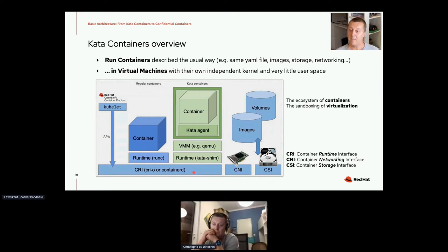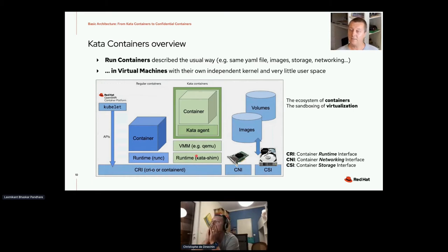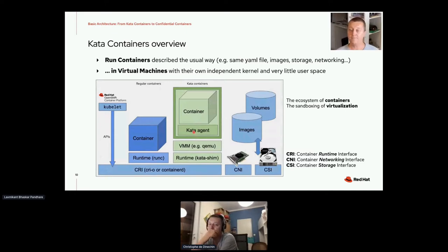Kata containers is made possible by the flexibility and extensibility of the Kubernetes architecture, which has a number of interfaces such as the Container Runtime Interface, the Container Networking Interface, and the Container Storage Interface. We can add a plugin that replaces existing runtimes such as runC or crun, invoked by the Container Runtime Interface to start a virtual machine. The virtual machine represents a Kubernetes pod, and inside this virtual machine we run containers. This allows us to conceptually separate different trust realms for the platform, the tenant, and the host.